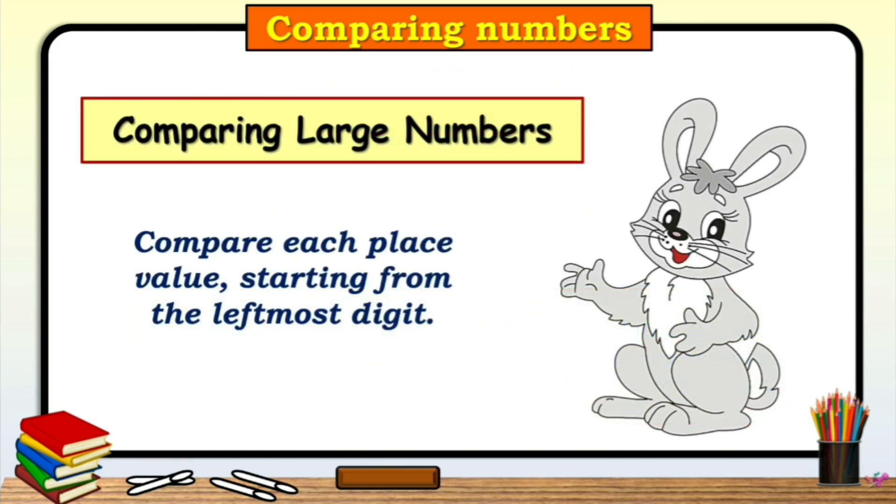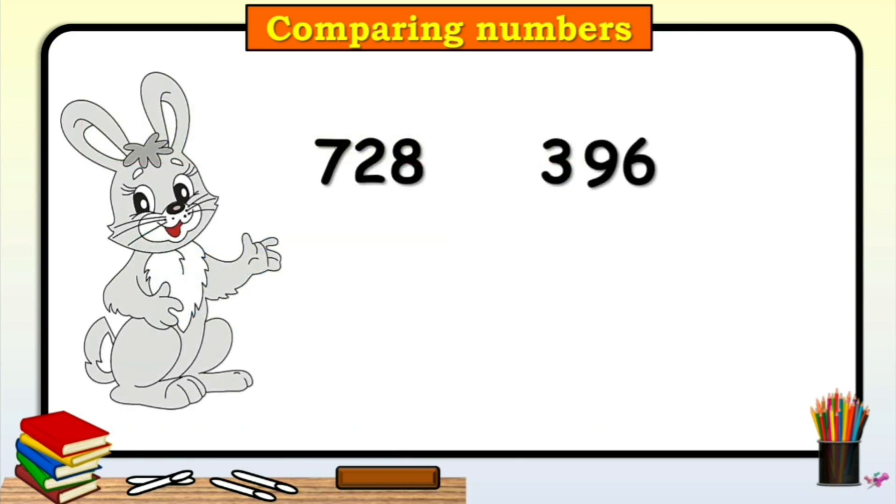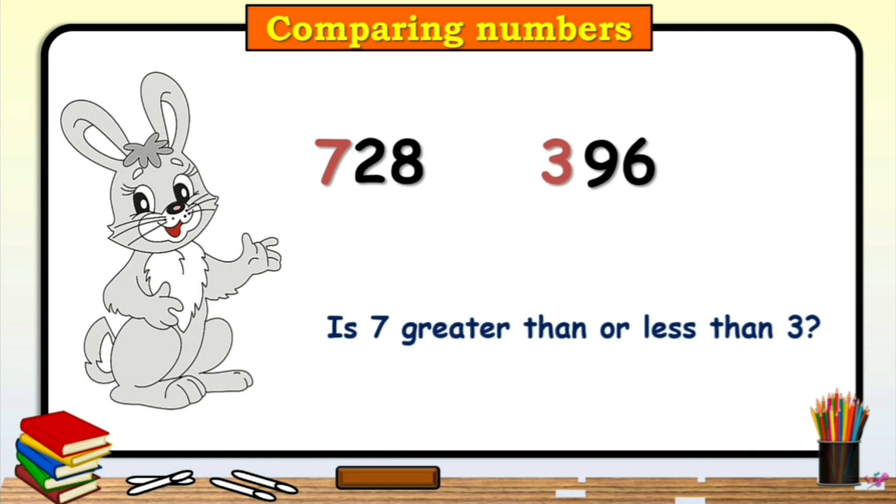Comparing large numbers. To compare three-digit numbers, we have to compare each place starting from the leftmost digit. For example, let's compare 728 and 396. Start by comparing the leftmost digits which on a hundredth place. Is 7 greater than or less than 3? You got it. 7 is greater than 3. That means, 728 is greater than 396.